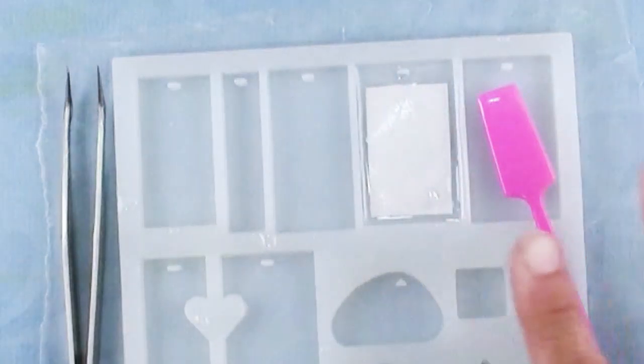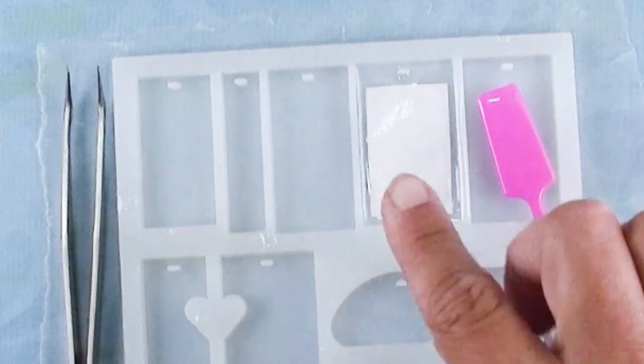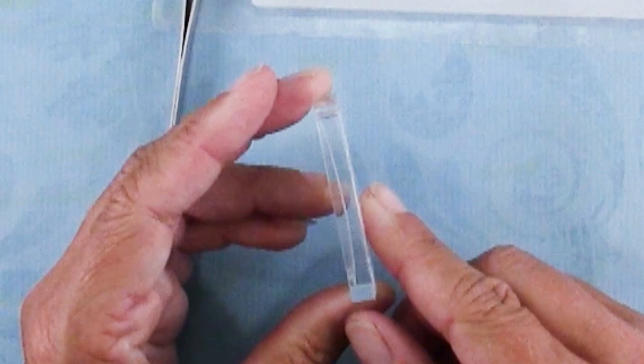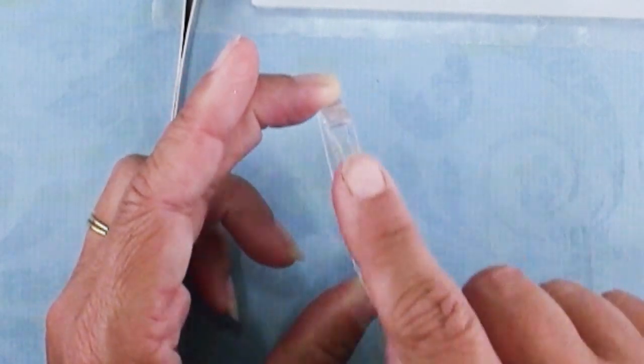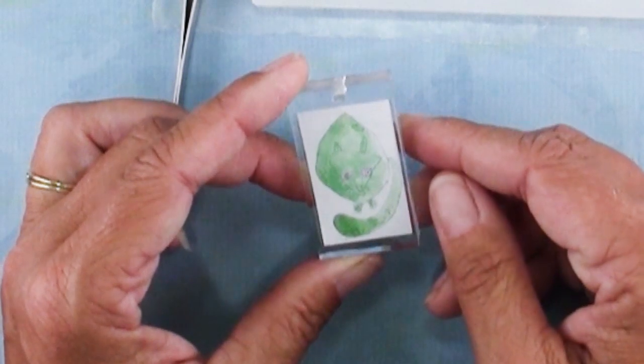Now if you want the whole thing just encased in clear resin, then go ahead and continue to fill up the mold with your clear resin. What you'll end up with is something like this. You can see that paper is sandwiched right in the middle there and there's my piece with my artwork.